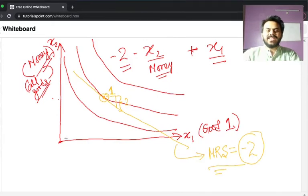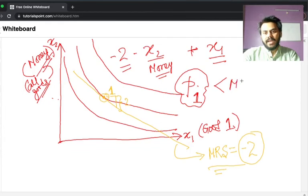So the price at which the good is trading, the price of good one, essentially P1, is going to be very different than the MRS in a lot of cases. But let's say your price of good one is less than MRS. So definitely you would like to trade here, you would like to have more of good one.